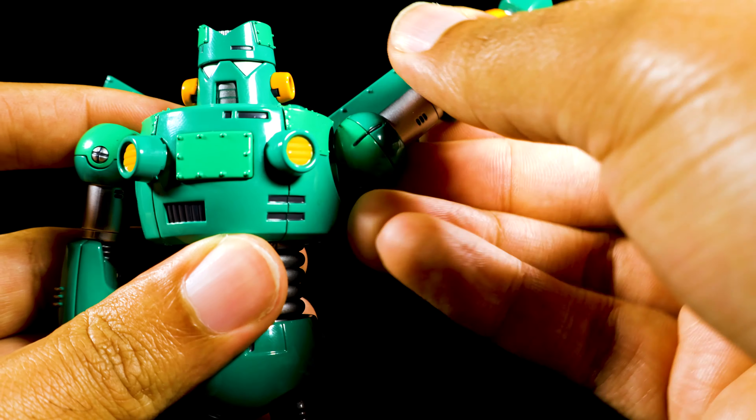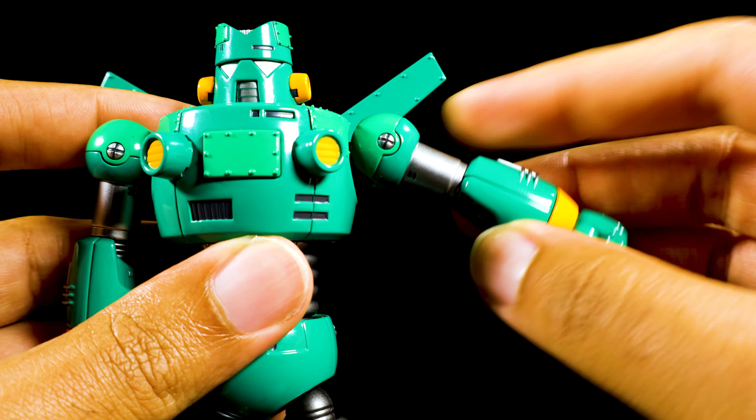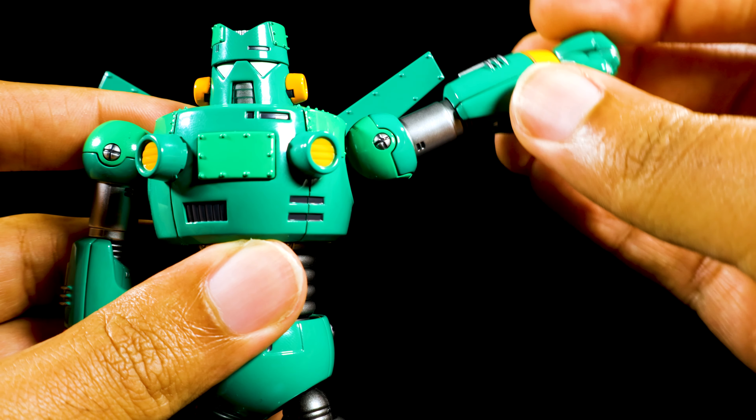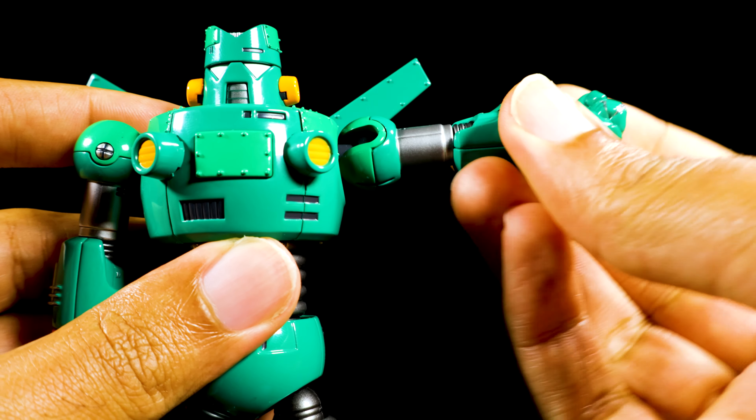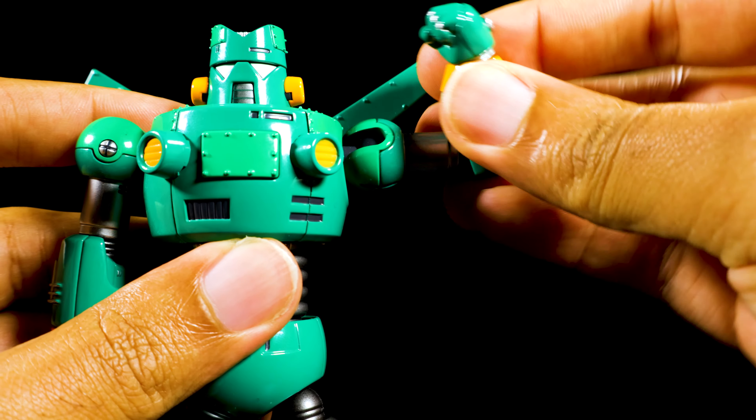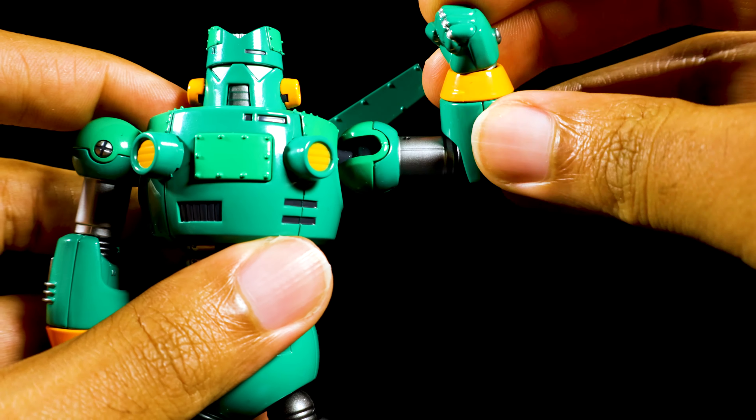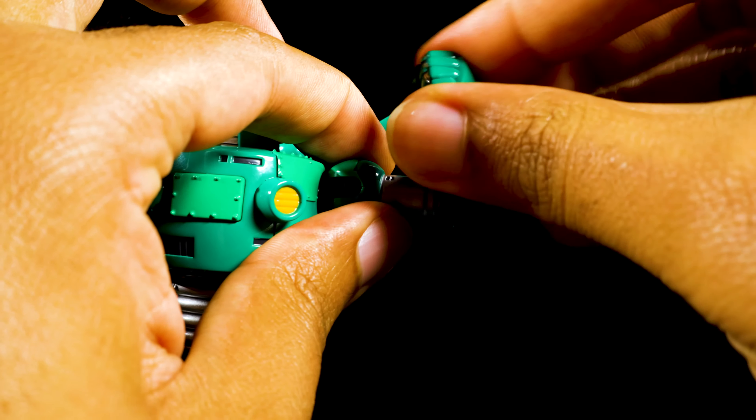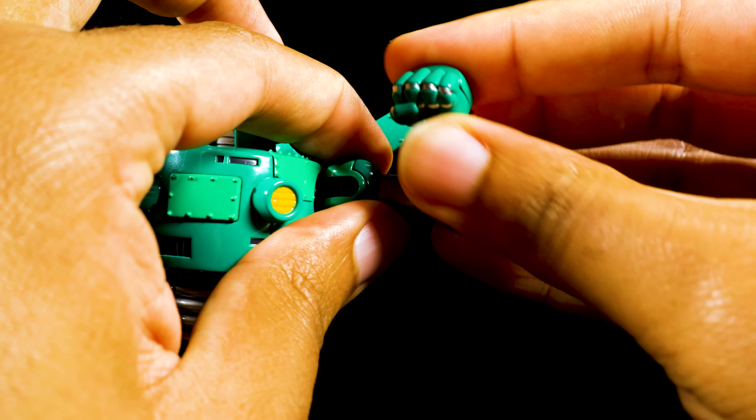The arms have a great range of movement. We can rotate the arms a full 360 degrees. The arms can come up higher than 90 degrees. We have single jointed elbows, they go up a little bit high but this is pretty good. We have a swivel in the elbows. The fists are on ball joints, we can tilt and spin them freely.